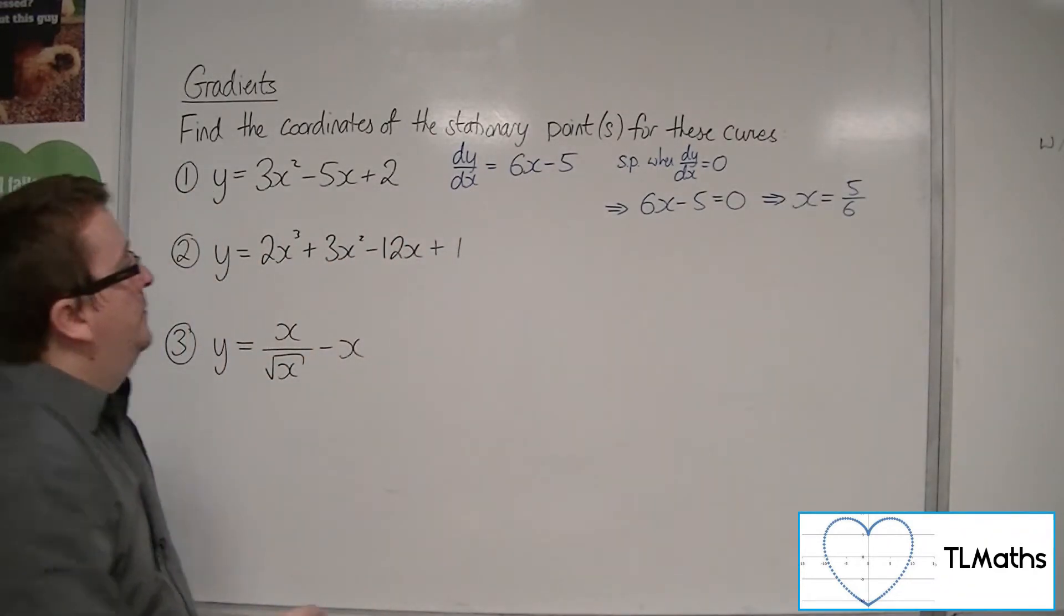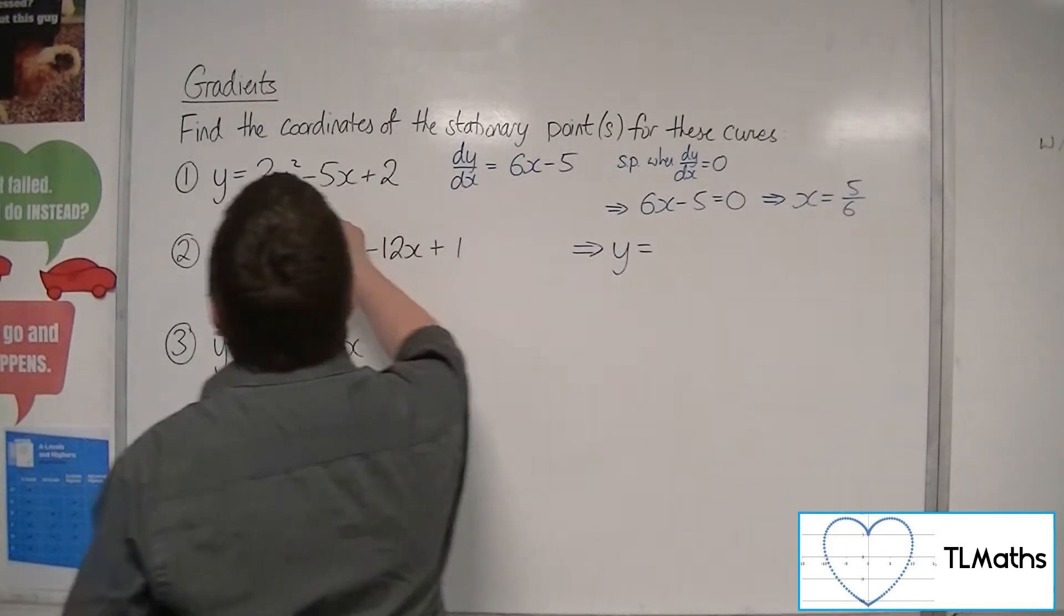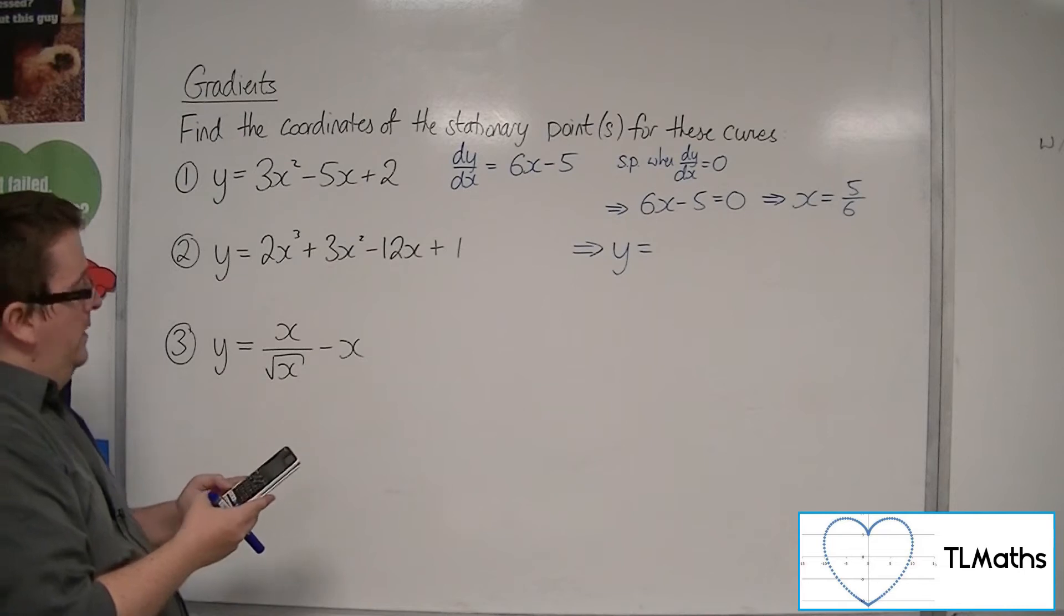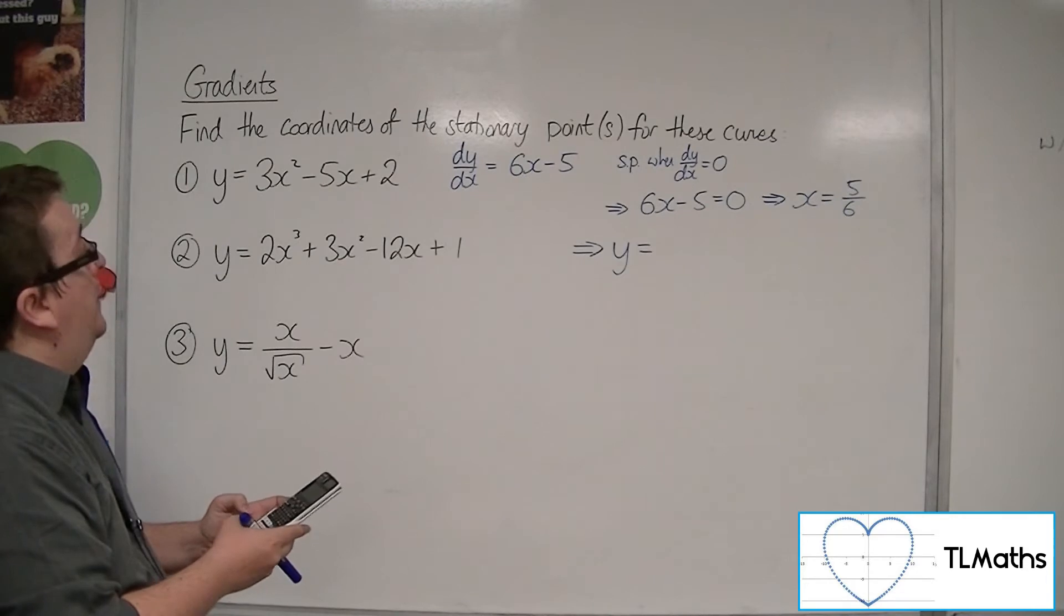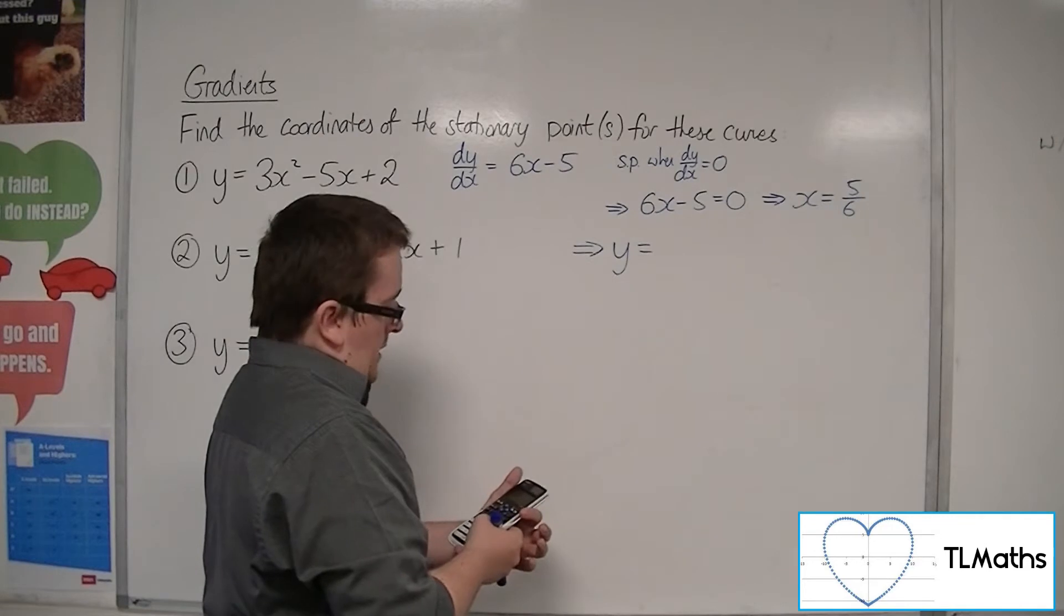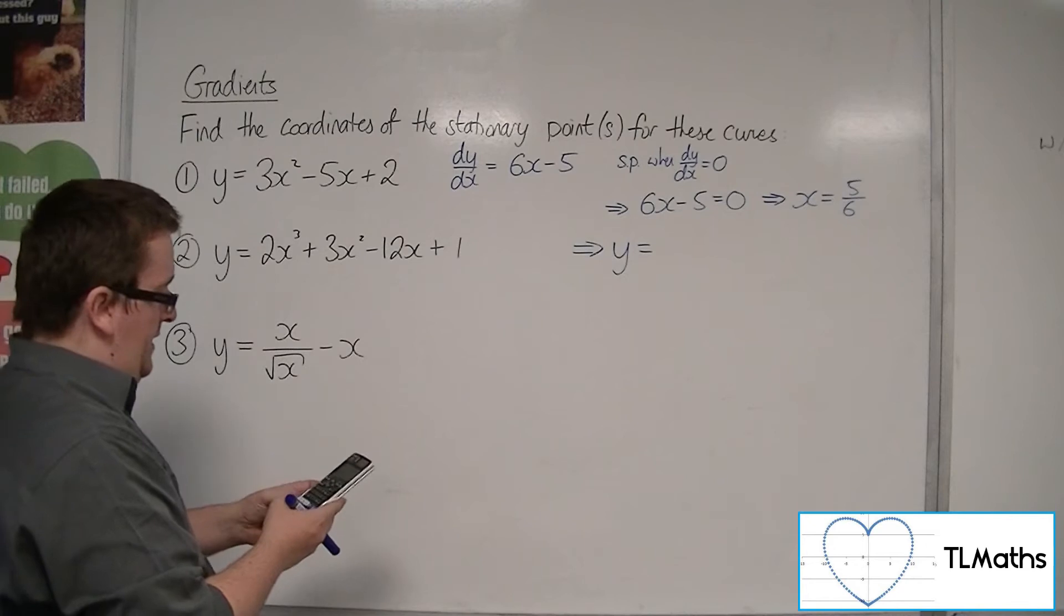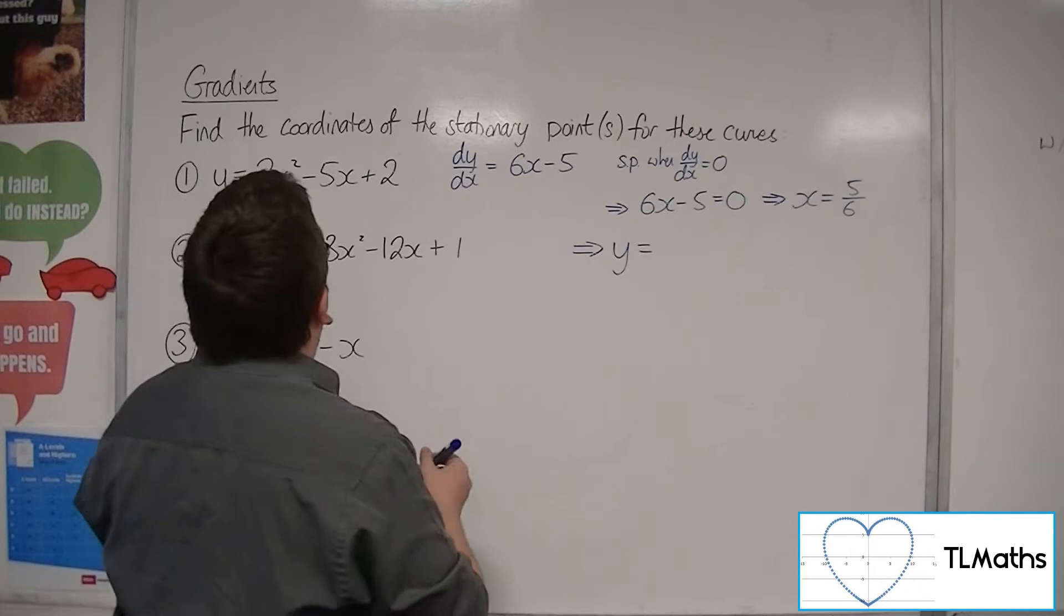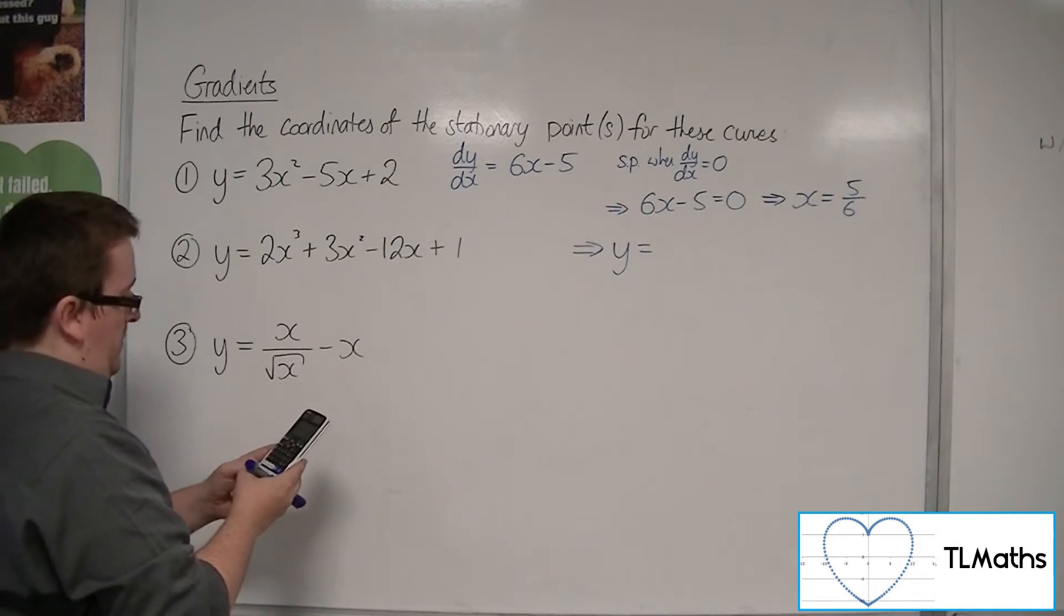If I substitute that back into the original curve, I can find its y-coordinate. So 3 lots of 5 sixths squared, take away 5 lots of 5 sixths, plus 2. And that gives me something not particularly friendly for my calculator, sadly. So let's do this a bit of a long way. We've got 25 twelfths, take away 5 lots of 5 divided by 6, so minus 25 twelfths, plus 2.